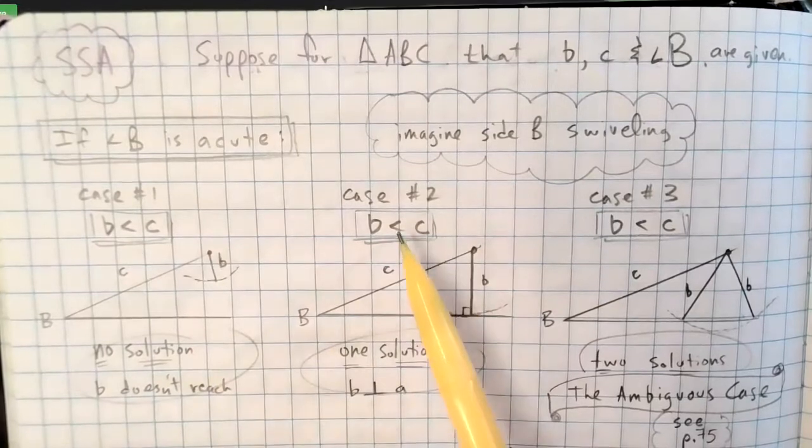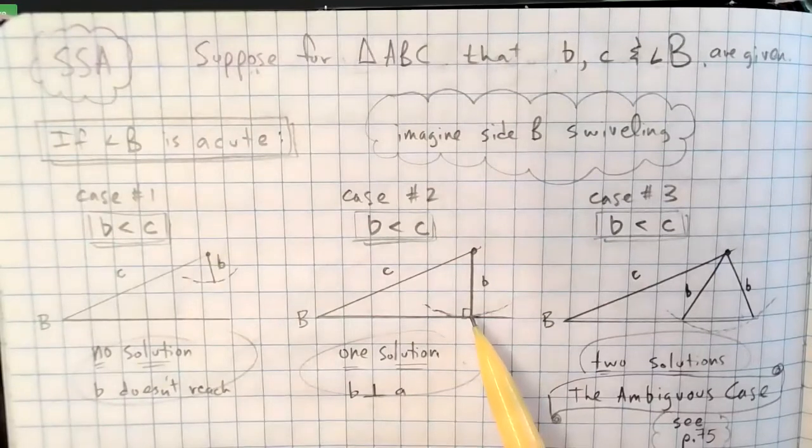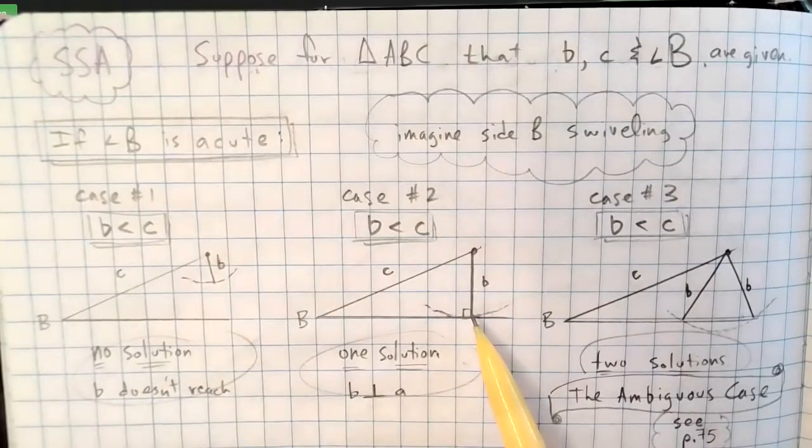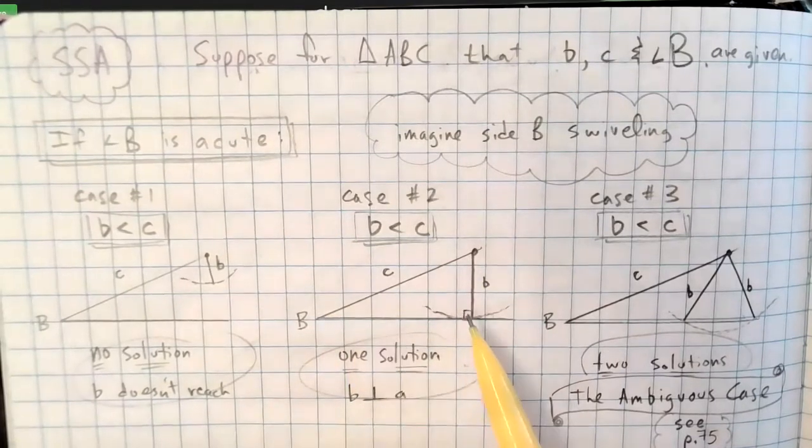Case two. Let's say b is less than c. Sure, it's still less, but it just barely touches that third side. It only touches it at a single point. That would be a right triangle, and you'd have all the trig functions at your disposal. That's great. That's one solution. Pretty straightforward solution.